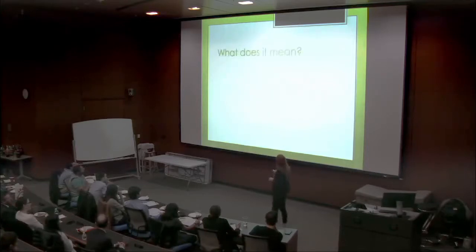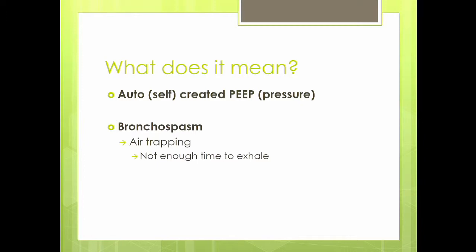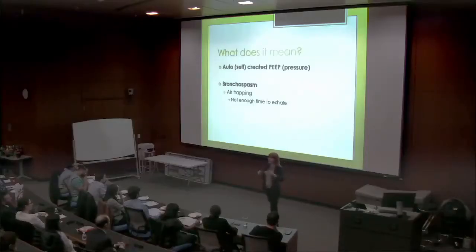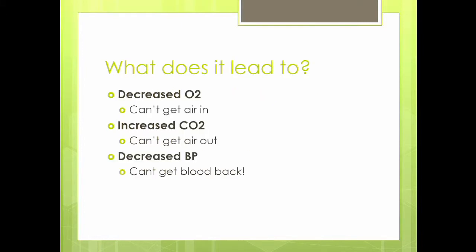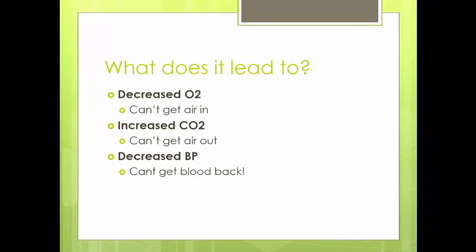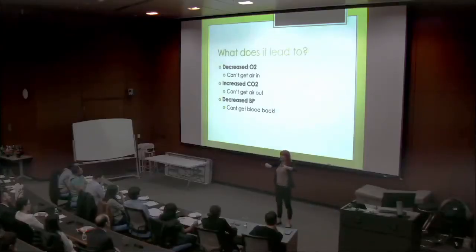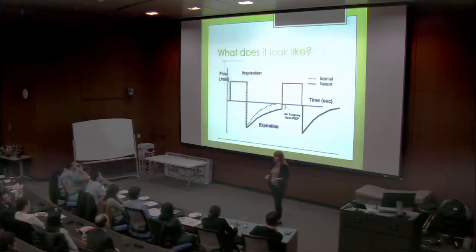Auto-PEEP quite literally means self-created positive end-expiratory pressure. Your asthma patient has obstructive lung disease — they can get air in but they can't get air out. With increased bronchospasm, that leads to air trapping with no time to exhale. You get decreasing O2 because you can't get new air in, increasing CO2 because you can't get old air out, and the most feared complication: tanking blood pressure. As they breathe and breathe, intrathoracic pressure increases such that blood can't get back to the heart, never makes it through the lungs, never gets out the left side — and that's how an asthmatic can actually die.